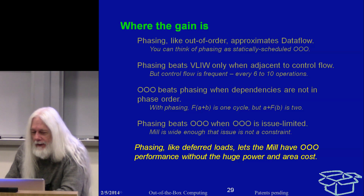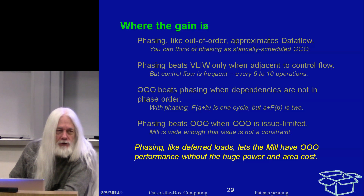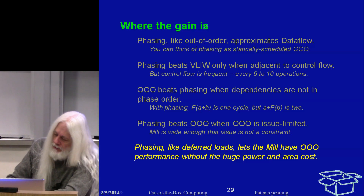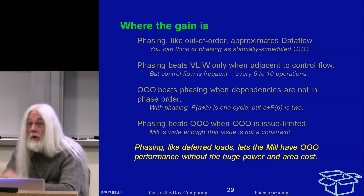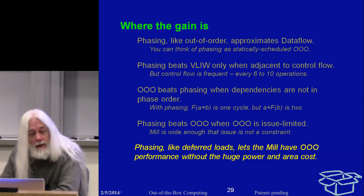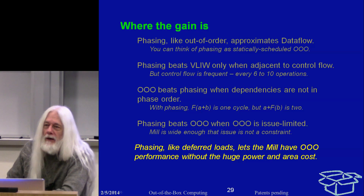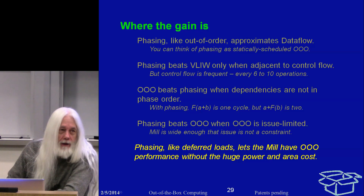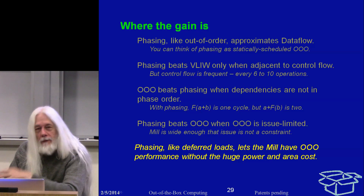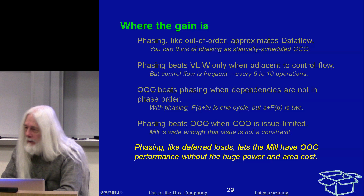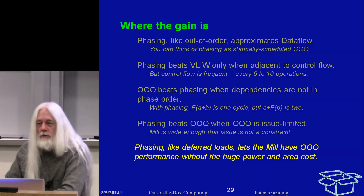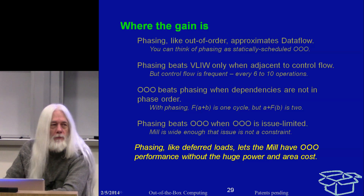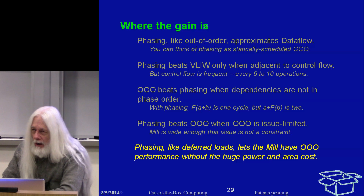Phasing is an example of something — another example being the deferred load from the memory system talk — where we can approximate the performance of an out-of-order machine without the power and area overhead of actually doing a real out-of-order. We will not often actually beat an out-of-order machine, but we will be roughly at par in terms of total throughput, and the saving is in the power and the area.